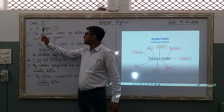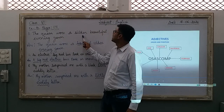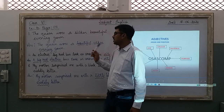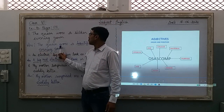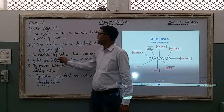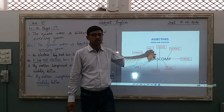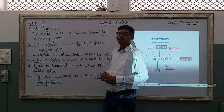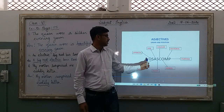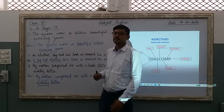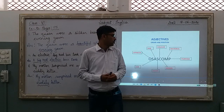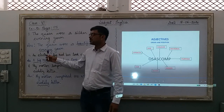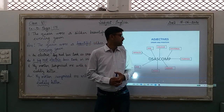The first sentence is: 'The queen wore a simple beautiful evening gown.' The corrected answer is: 'The queen wore a beautiful silken evening gown.' Check the sequence — 'beautiful' is an opinion so it comes first, 'silken' refers to material, and 'evening' refers to the time or purpose.